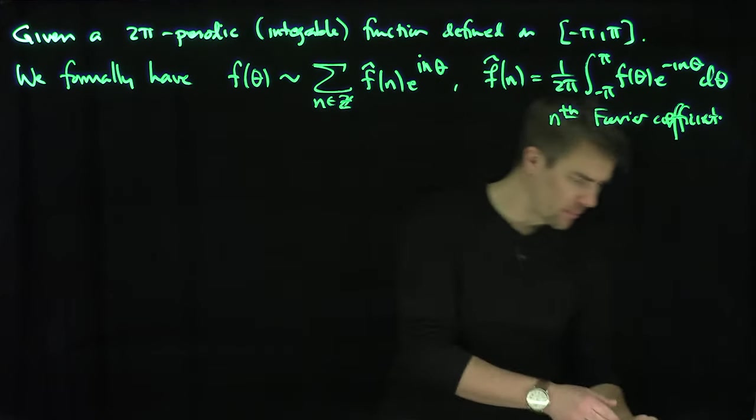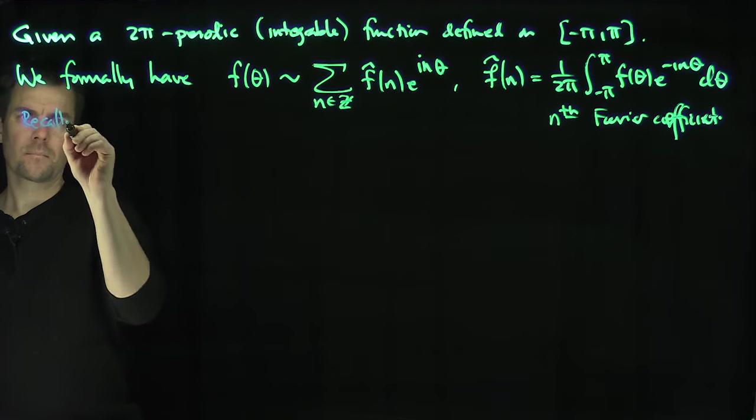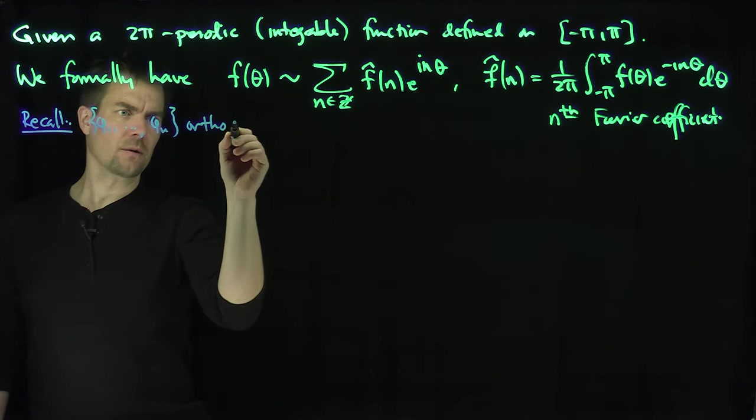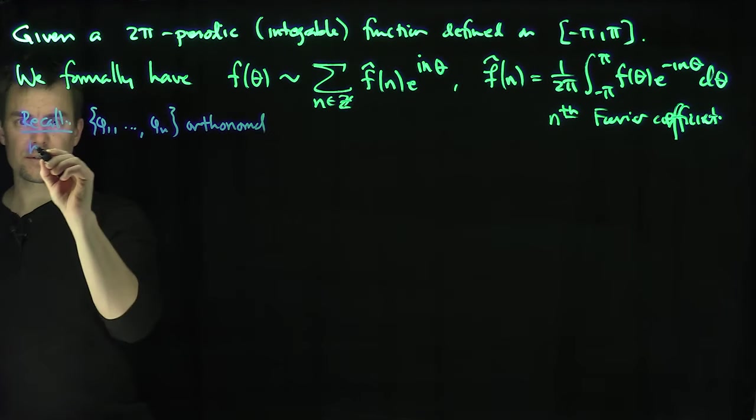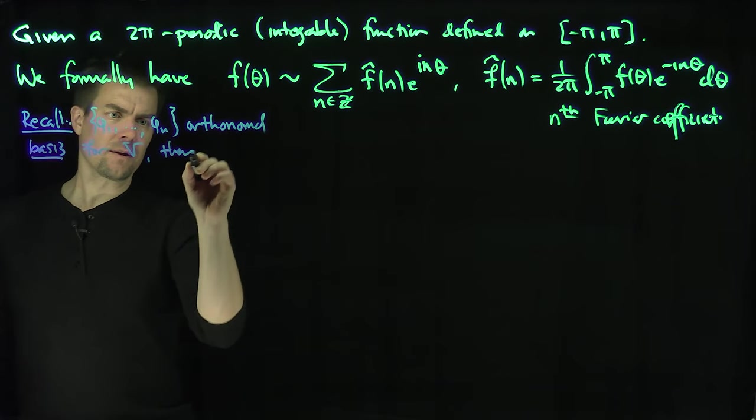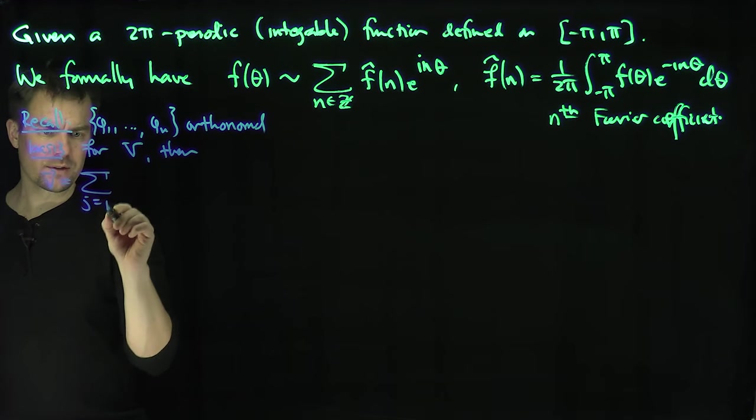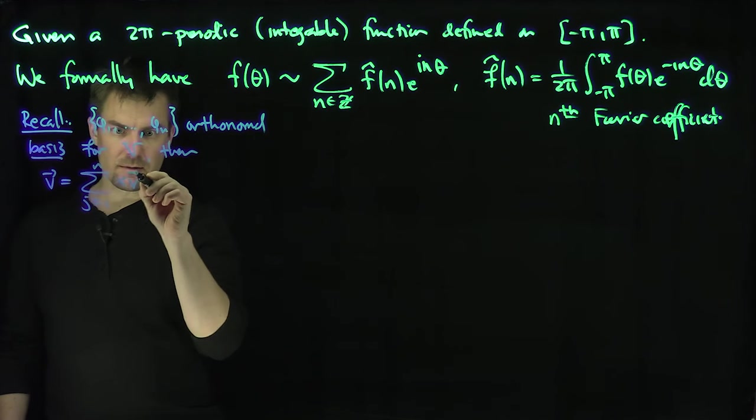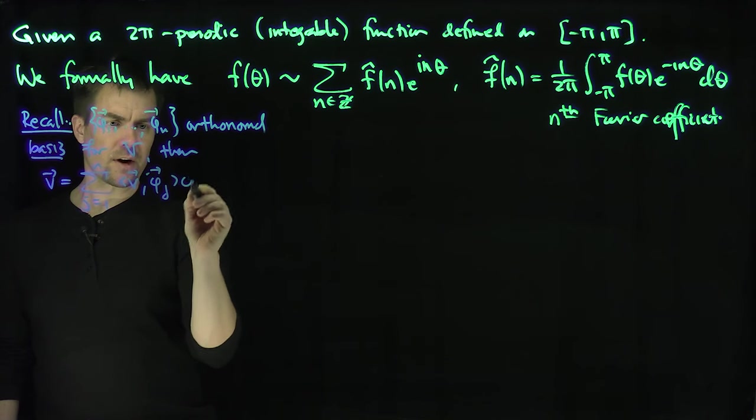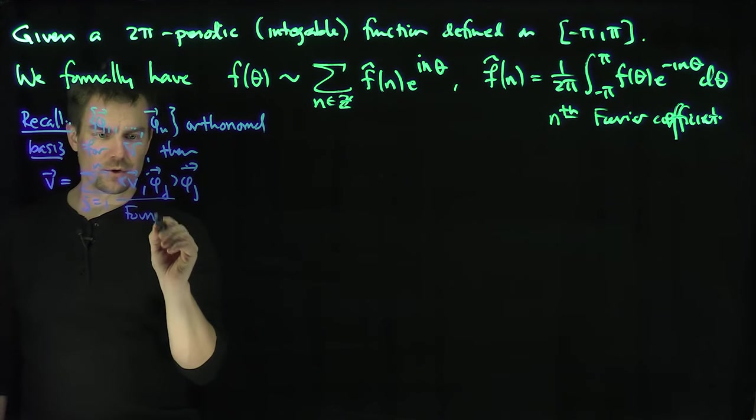Now if we were in a regular inner product space, let me recall a basic fact from linear algebra. If φ₁ through φₙ is an orthonormal basis for a vector space V, then we can say that any vector in my vector space is just the sum j goes from 1 to n of ⟨v, φⱼ⟩ in the direction of φⱼ. And of course, these things really over here, these are really like my Fourier coefficients over here.